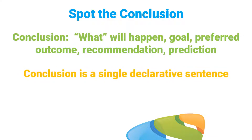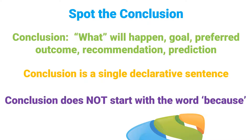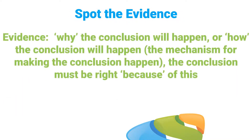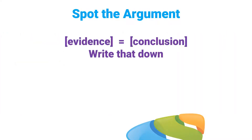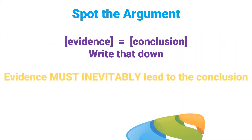Write down the conclusion in a single declarative sentence and do not start with the word 'because.' The evidence is why or how the conclusion will happen — some people think of it as the mechanism for making the conclusion happen. The idea is: the conclusion must be right because of this evidence.